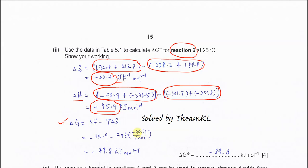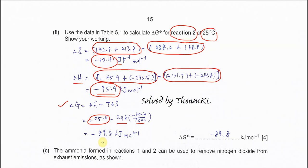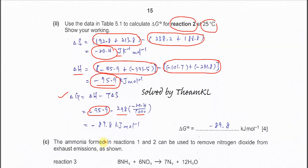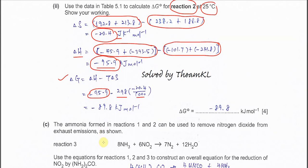Therefore, −20.4 needs to be divided by 1000 to convert joules to kilojoules. Temperature 25°C means 298 K. So the calculation is ΔH minus T times (−20.4 ÷ 1000), and together with the enthalpy, the Gibbs energy will be −89.8 kJ mol⁻¹. This is the standard calculation for Gibbs energy using entropy and enthalpy.